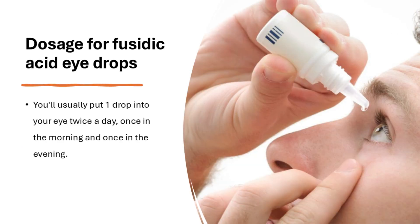Dosage for Fusidic Acid eye drops: You will usually put one drop into your eye twice a day — once in the morning and once in the evening. To apply: take the cap off the tube. The tip of the tube must not touch your eye. If it does, squeeze out two or three drops onto tissue and rinse the tip with salt water. Tilt your head back, pull your lower eyelid down gently, hold the tube over your eye and look up, then squeeze one drop into your lower eyelid. Close your eye for one to two minutes and press gently on the side of your nose where the corner of your eye meets your nose — this helps keep the drop in your eye.